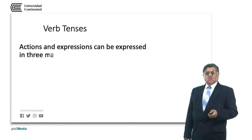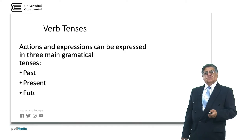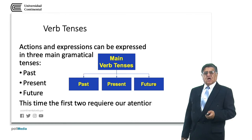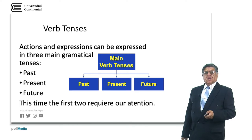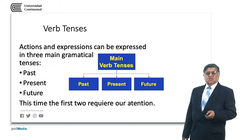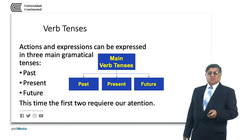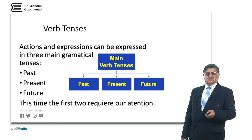We are going to work with verb tenses this time. Verb tenses will express and give information about actions and expressions that will normally go in three different tenses: the past, the present, and the future. Each of them will have different forms in it. The past will have continuous, the simple, the past perfect, etc. The present the same and the future also.